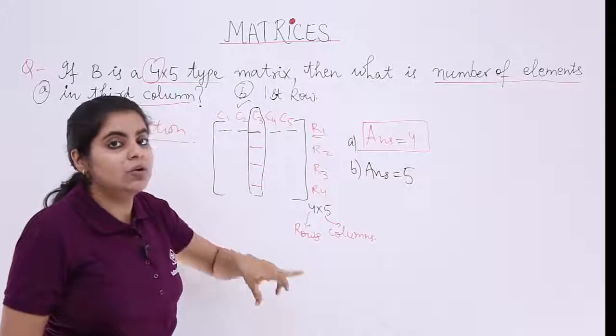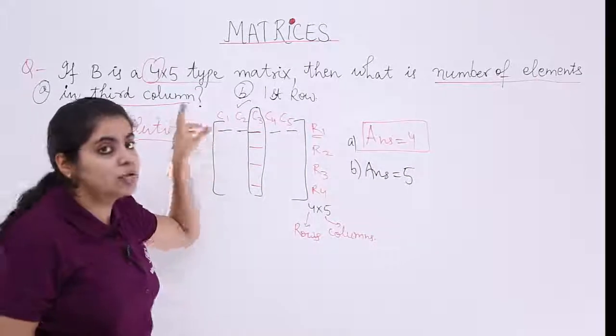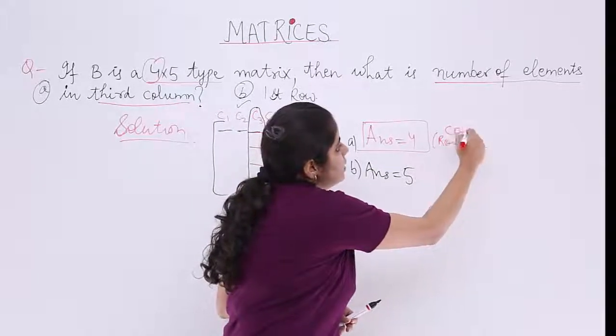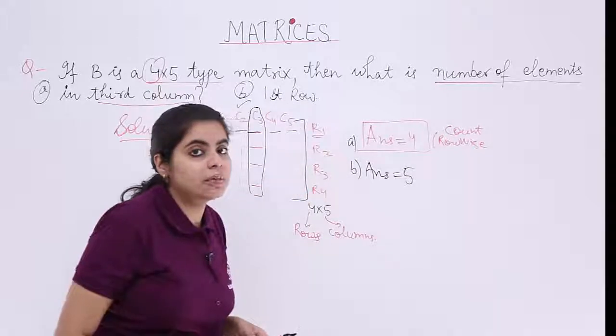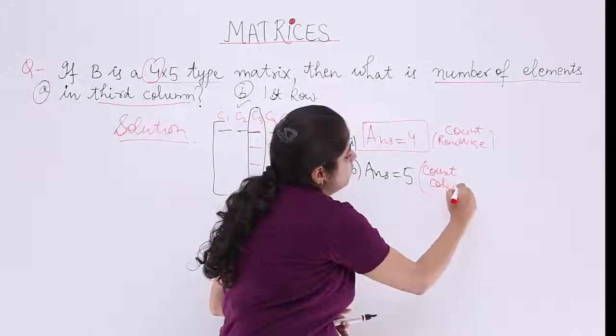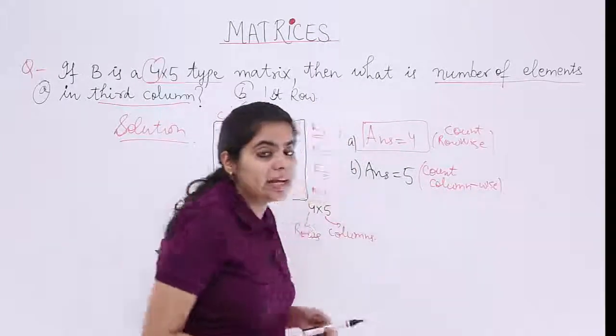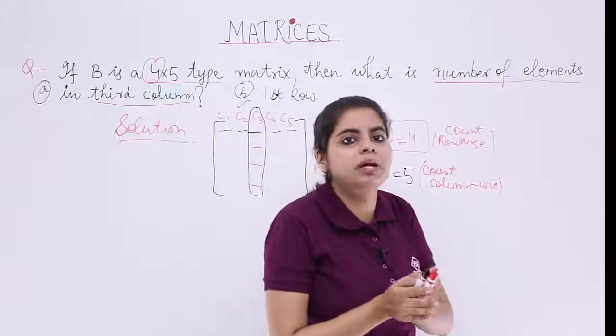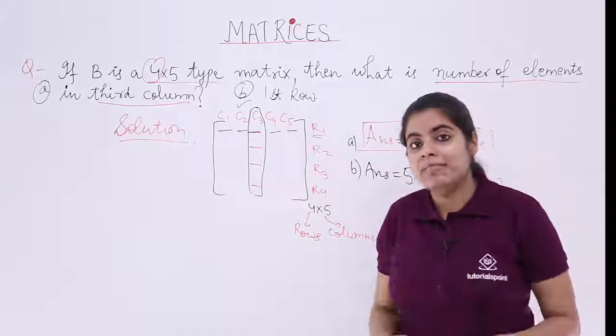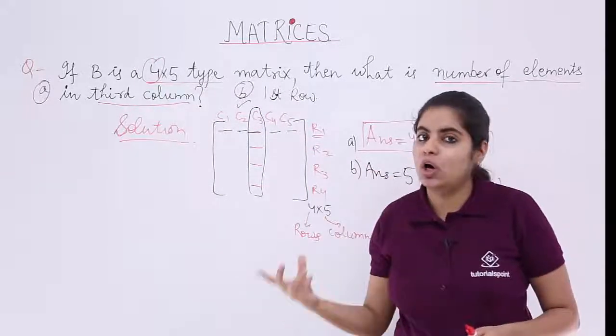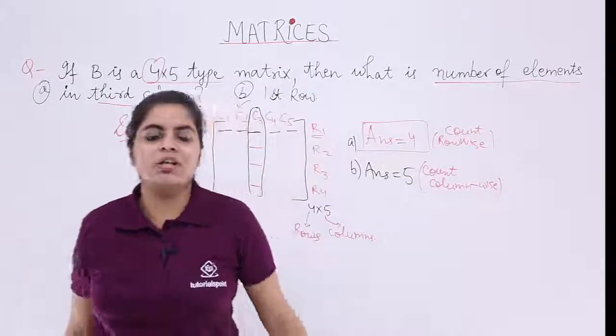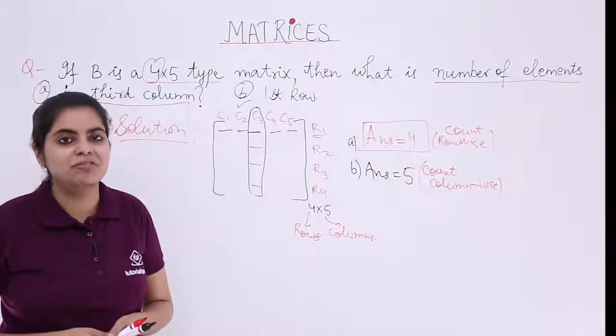When talking about a column, the answer is row wise. You count row wise. And when talking about row, you count column wise. Again I repeat. The question was to find out the number of elements when a particular order is given. You draw a schematic of the matrix. And then count for rows, you count column wise. For columns, you count row wise. So in this video we saw this question. The question was based on the counting of number of elements.